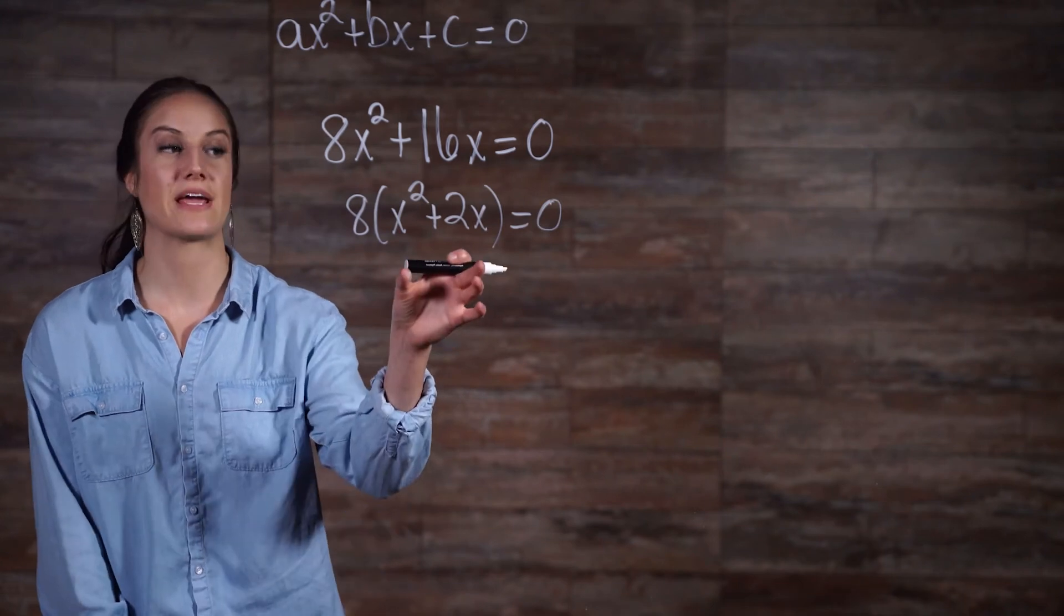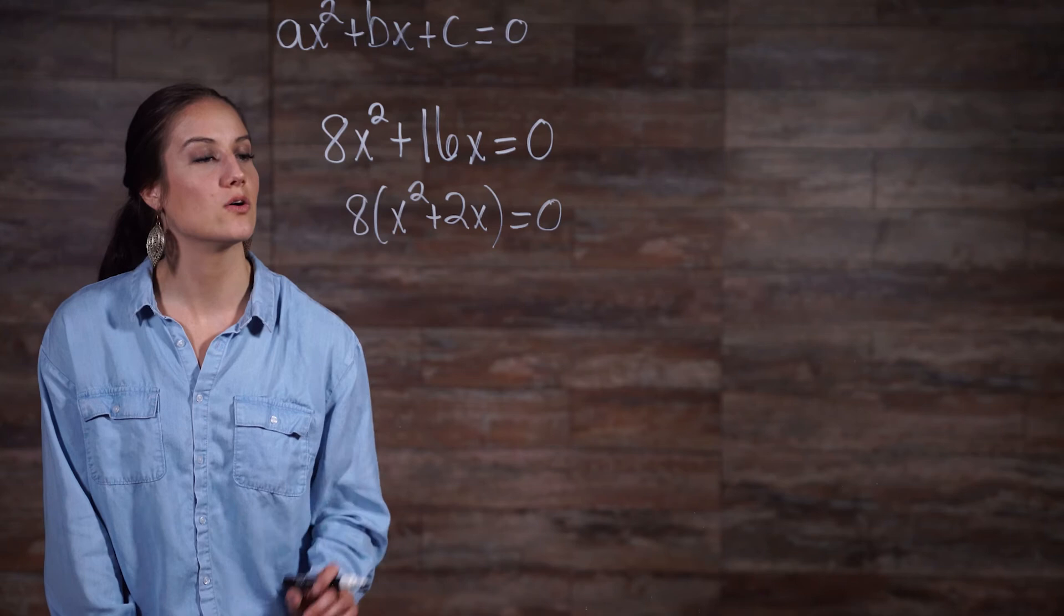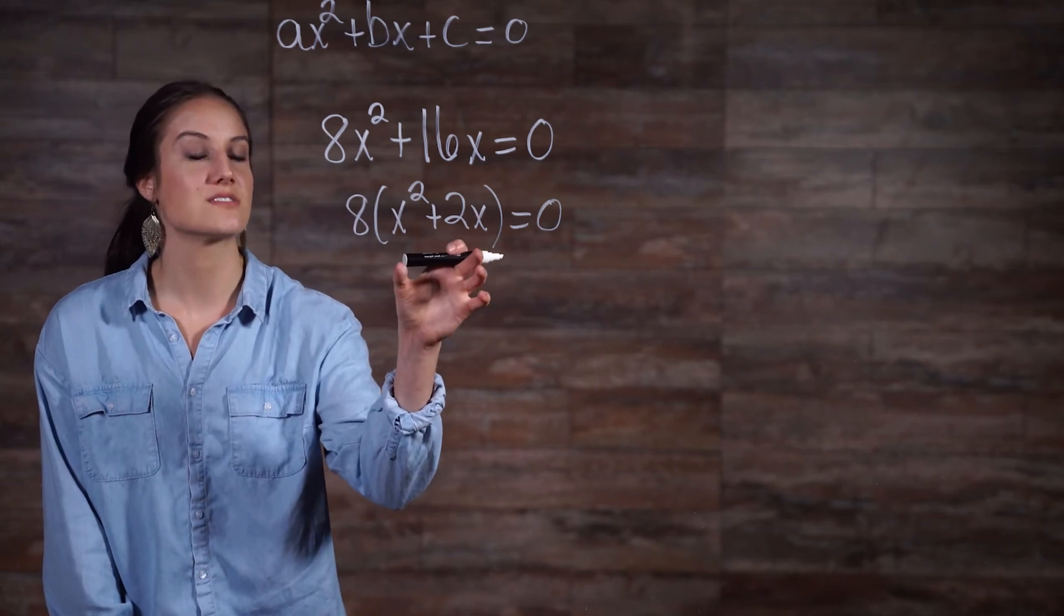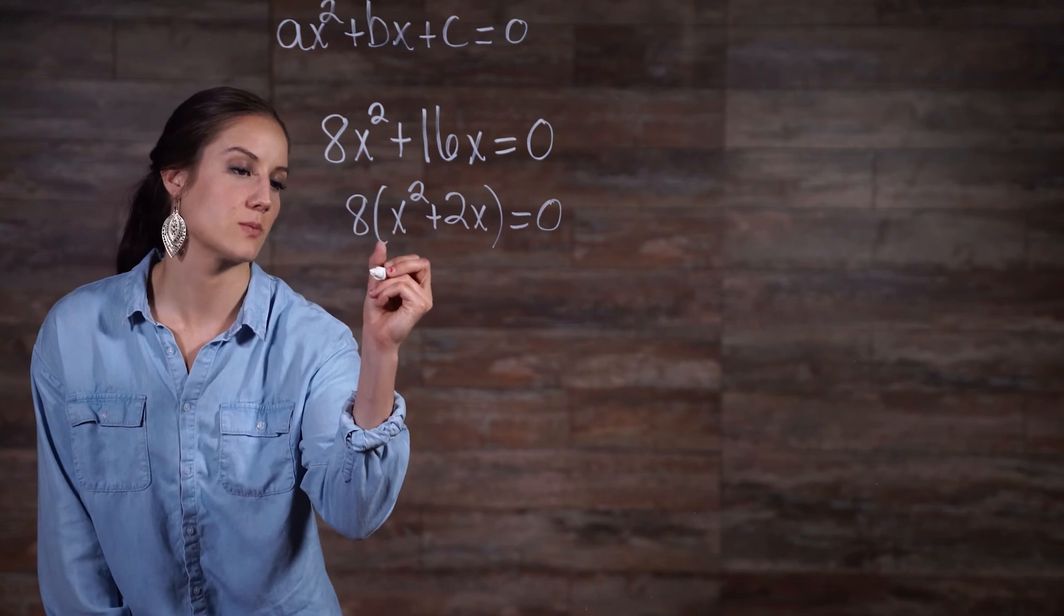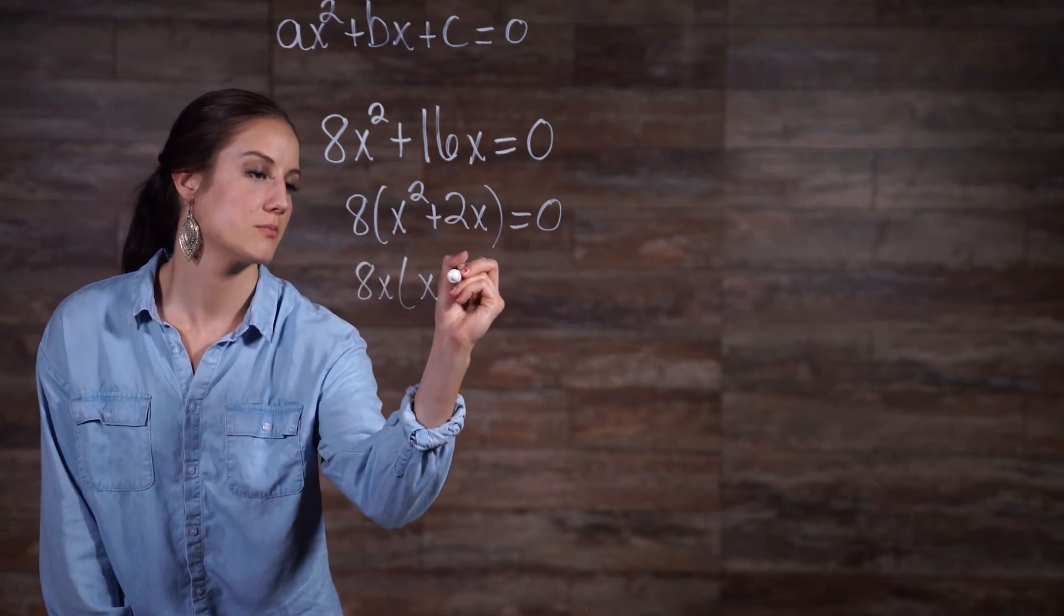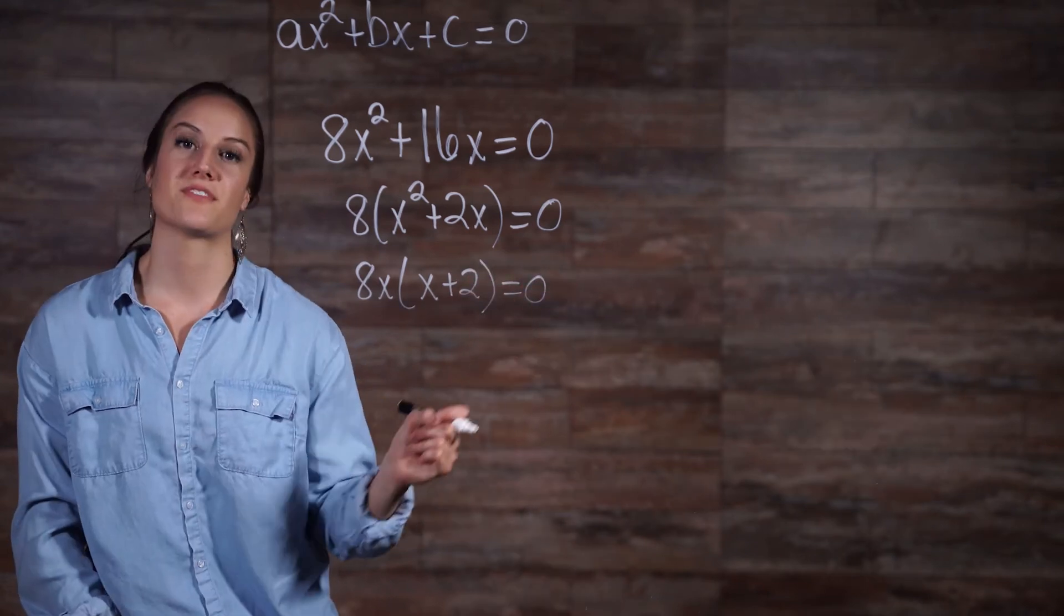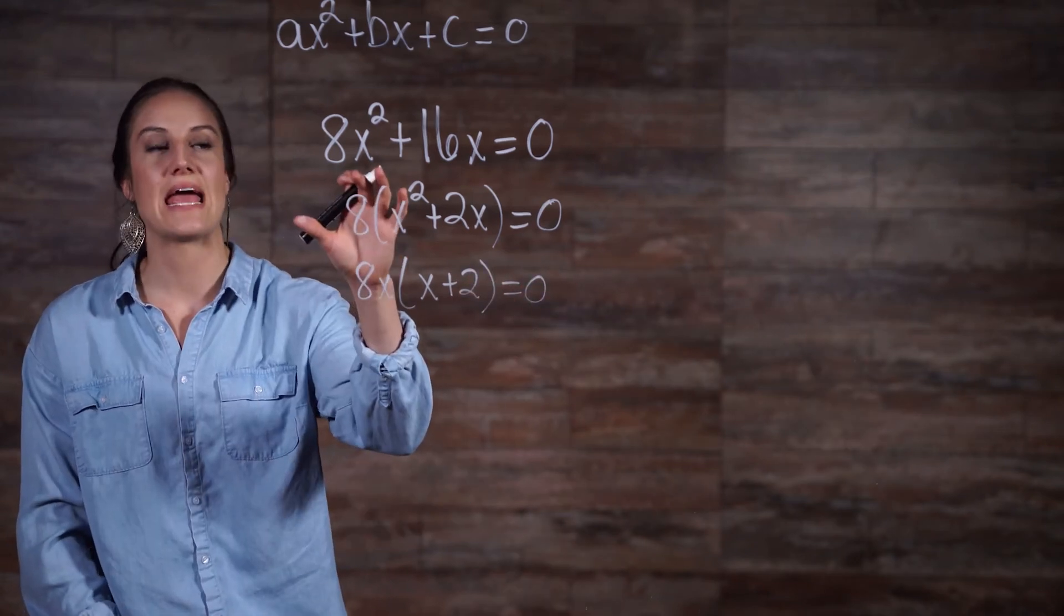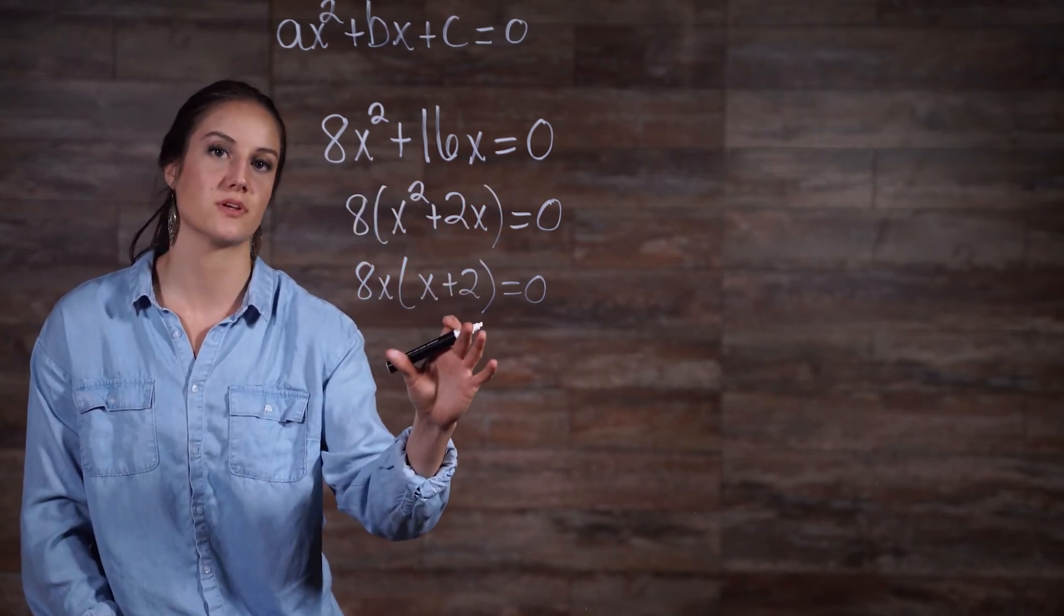Now we have 8 being multiplied by everything on the inside, but we still have something that can be factored out. x squared plus 2x share a common factor of x, so we can factor out our x, and we have 8x times x plus 2, all equal to 0. And we've got it, the factors of our equation 8x squared plus 16x are 8x and x plus 2.